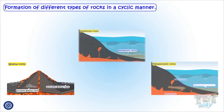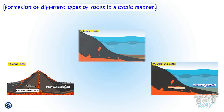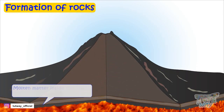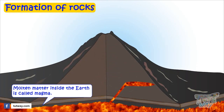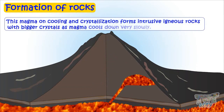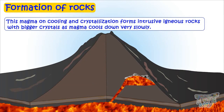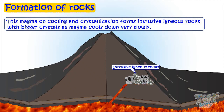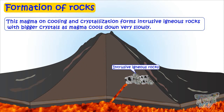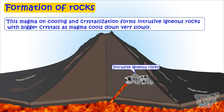Now here we have the formation of different types of rocks in a cyclic manner. Let's have a look. Firstly, there is molten matter inside the earth, which is called magma. And this magma cooling and crystallization forms intrusive igneous rocks with bigger crystals, as magma cools down very slowly.